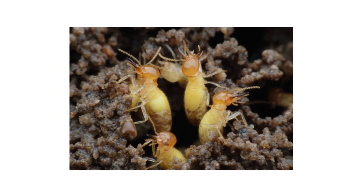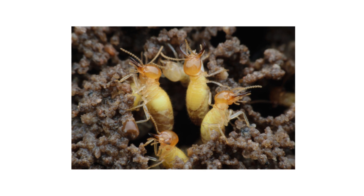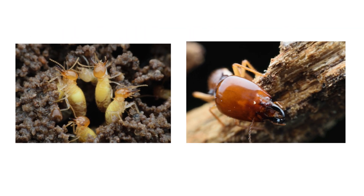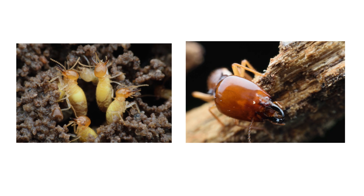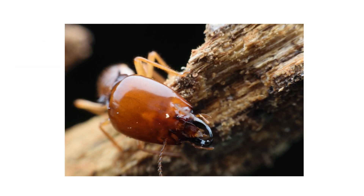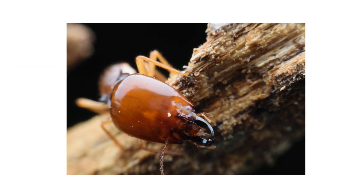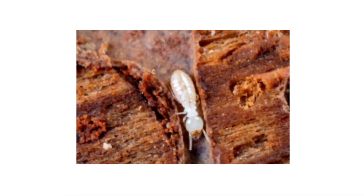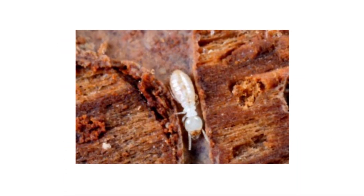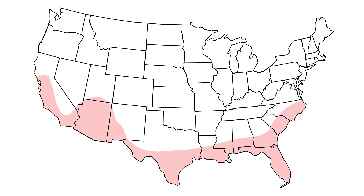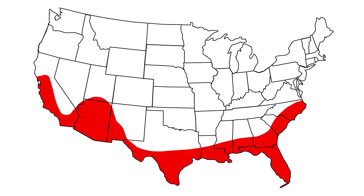While the subterranean termite is the most common termite found in the United States, the drywood termite is not uncommon and can cause just as much damage to homes and wooden structures. Unlike subterranean termites, drywoods colonize in wood and do not depend on moisture or soil to survive. Drywood termites are typically found in the United States' southern coastal states.